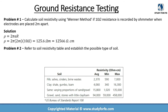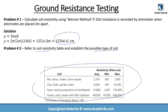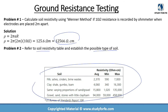Problem two asks us to refer to the soil resistivity table and establish the possible type of soil. The calculated resistivity of 12,566 ohm-centimeter falls under the category of sand and gravel mixture, which has a resistivity range of 1,020 ohm-centimeter up to 135,000 ohm-centimeter. It's not completely clear-cut as it could also fall under varying proportions of sand and gravel, but it is not a swampy area and has relatively higher soil resistivity.